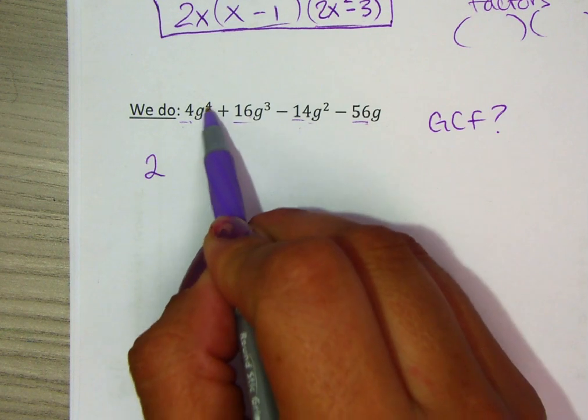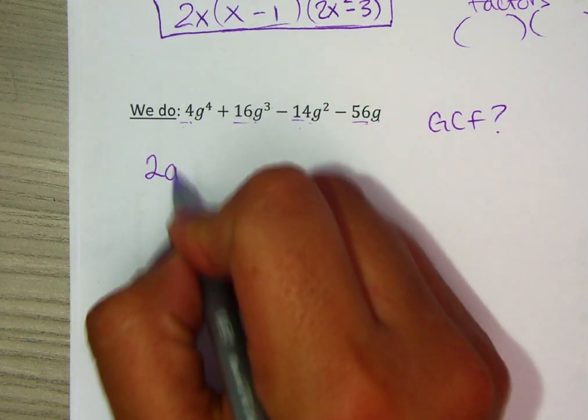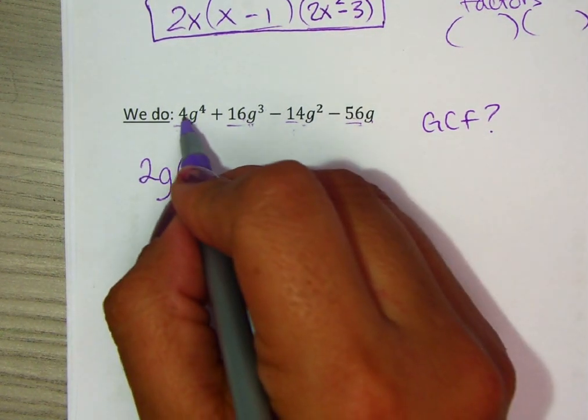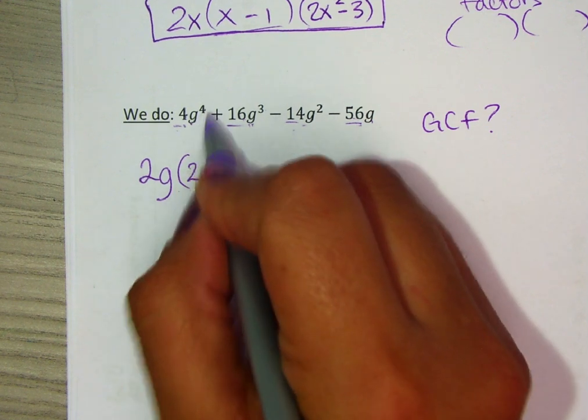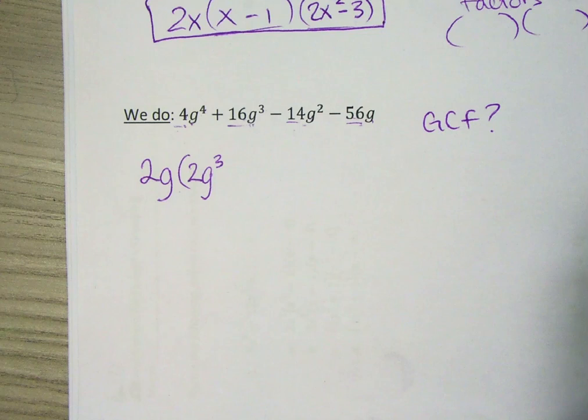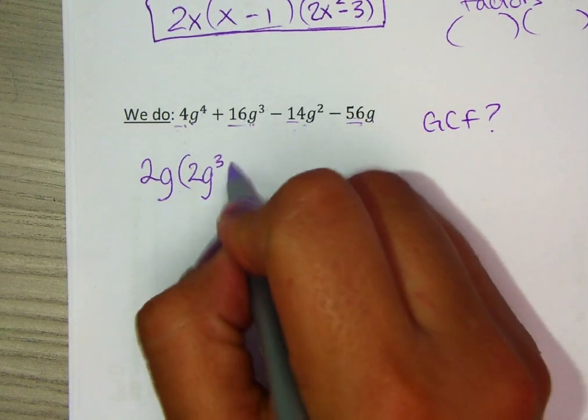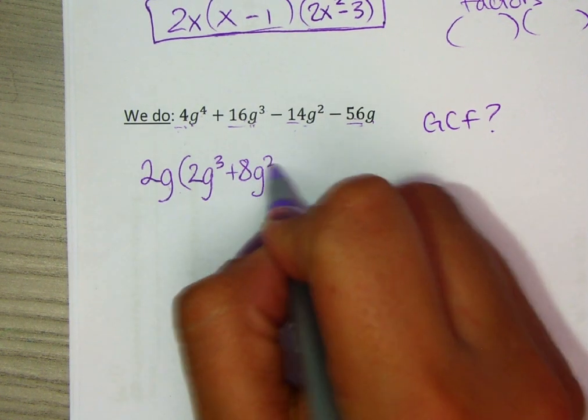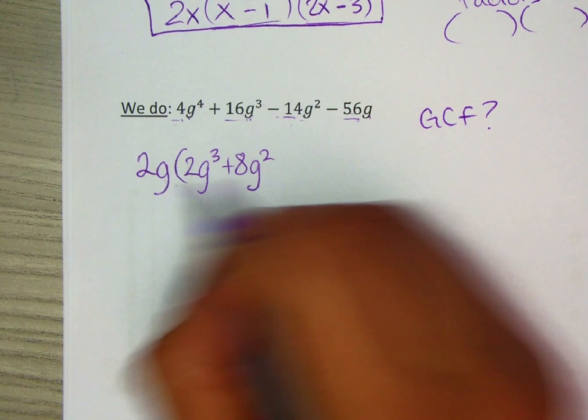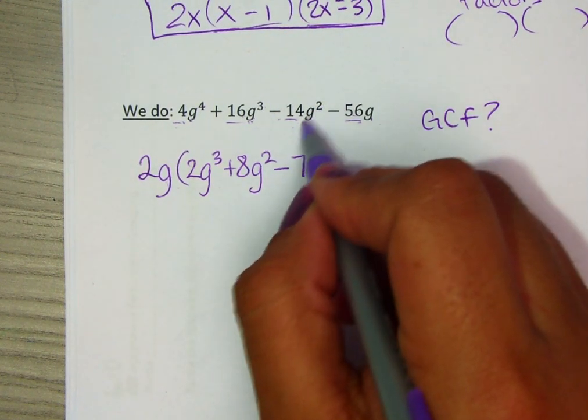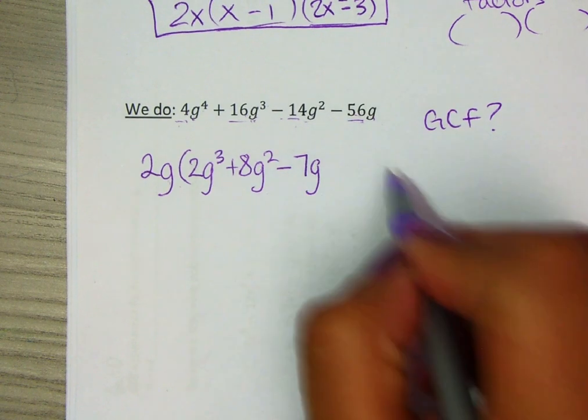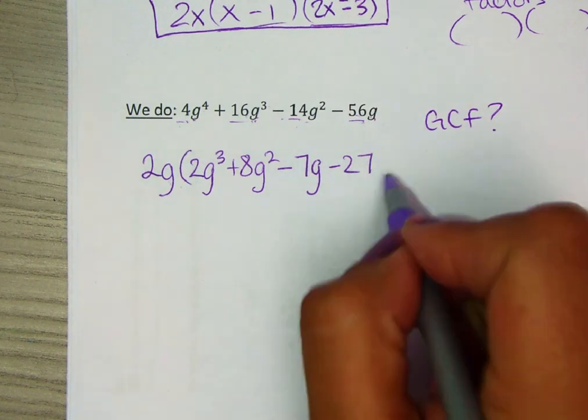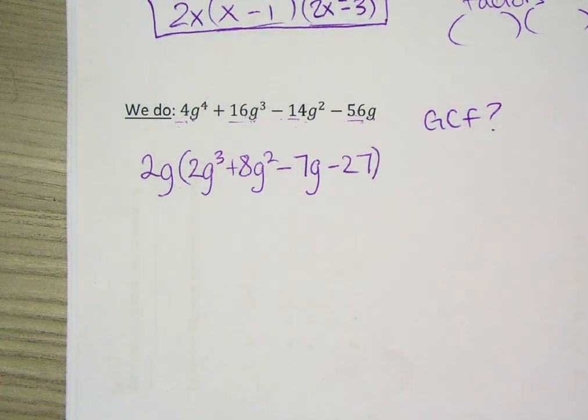Let's look at g, g⁴, g³, g², and g. There's at least a g in each term, so we're going to factor that out. If we divide each term by 2g, 4 divided by 2 is 2, g⁴ take out a g is g³. Then 16 divided by 2 is 8, g³ taking out a g leaves g². Negative 14 divided by 2 is negative 7, g² divide by g leaves one. Negative 56 divided by 2 is negative 28, and if you take out the g, there's no more g's left. That's the first step - take out the GCF if possible.